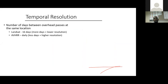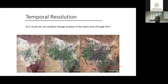The temporal resolution is the revisit period. For different satellites or sensors, the revisit period differs. In most cases, sensors with lower resolution take more days before passing over the same place again, while those with very high resolution take fewer days. Temporal resolution is important in remote sensing because we use it for change analysis or change detection — to determine what has changed since the sensor last passed over an area.